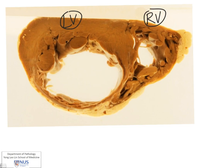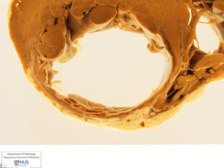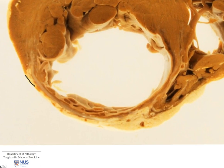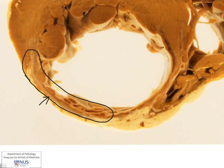What is very obvious is that within the anterior free wall of the left ventricle, there is an area of marked thinning. And if you look very closely in this area, you will see that there actually appears to be this almost greyish-white discolouration here. And this is because of fibrosis.